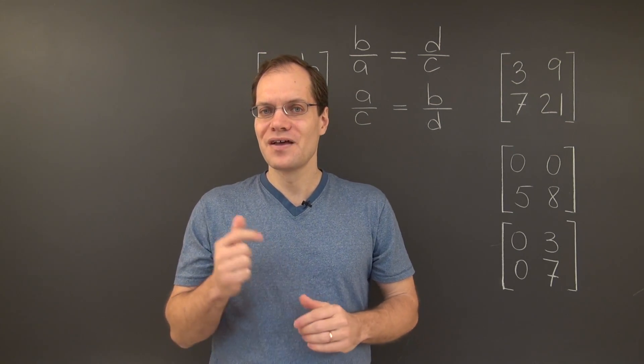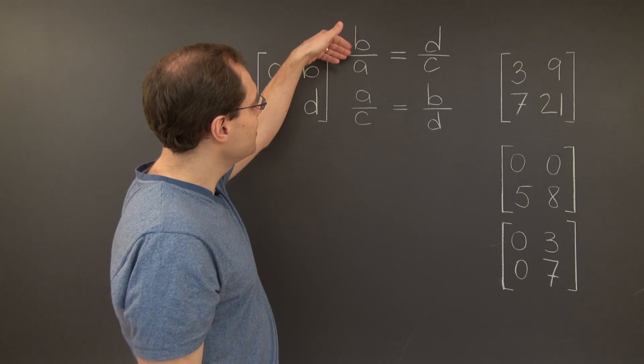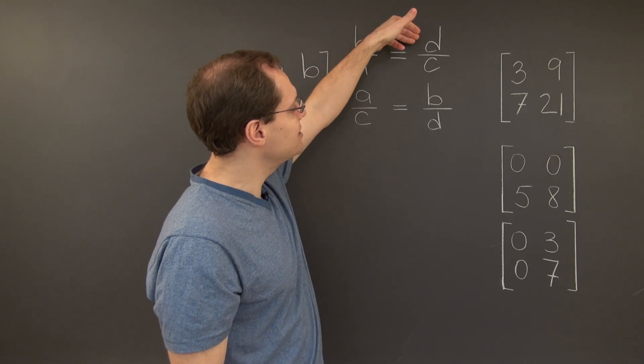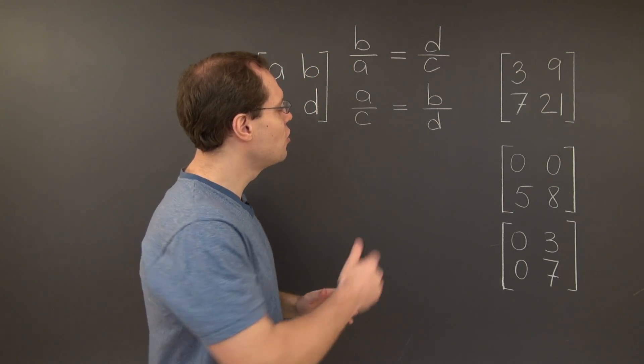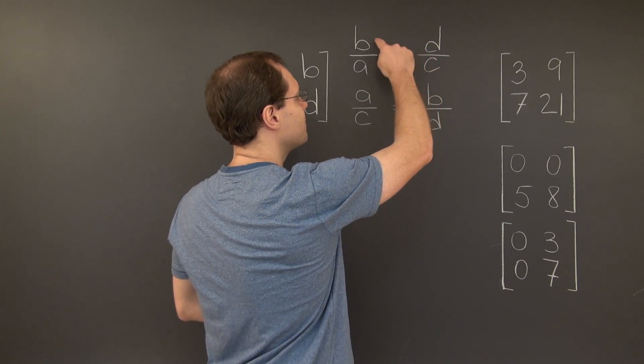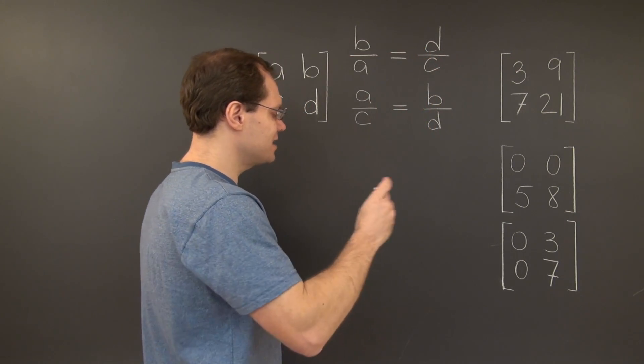For example, B is proportional to A as D is proportional to C, only if AD equals BC. Let's write that down.